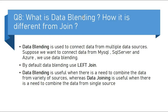The next question is: what is data blending and how is it different from a join? This is a very important interview question. Data blending is used to connect data from multiple data sources — suppose you have data in MySQL, SQL Server, Azure, and other databases. We can't use a join because join is used to connect data from a single data source. We use data blending to connect data from multiple sources. By default, data blending uses a left join. The key difference: data blending is useful when connecting data from multiple sources, while joining is useful when connecting data from a single source.